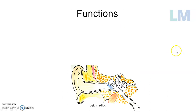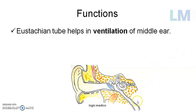The eustachian tube mainly performs three important functions. First, it helps in ventilation of the middle ear. The middle ear has bony walls on all sides — the superior, inferior, anterior, and medial walls — and the lateral wall is the tympanic membrane. So it is essentially a closed chamber on all sides, except for a window in the anterior wall through which ventilation is possible via the eustachian tube.